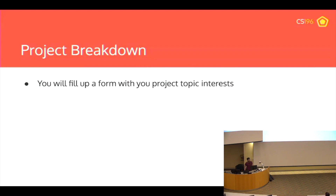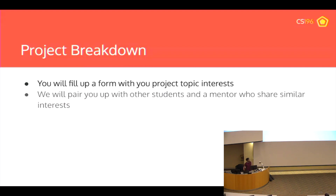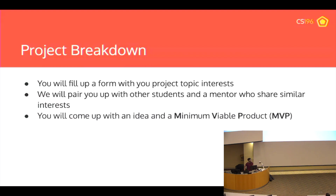For the project, first you'll fill out a form with your interests, prior experience, and what you want to work on. Then we'll pair you with other students with similar interests and a project manager with the most experience in that field. You'll work with your group to brainstorm and come up with an MVP — the Minimum Viable Product — which is the least you want to have accomplished by the end of the semester. For example, my group last semester made a Reddit data visualization tool; the MVP was a few subreddits you could click on and get data from. If you have time, you can go beyond that and implement new features.